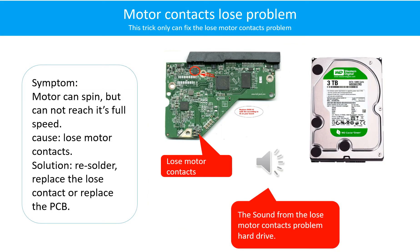Motor contacts loose problem. Symptom: the motor can spin but cannot reach its full speed. Cause: loose motor contacts. Solution: resolder or replace the loose contacts, or replace the PCB.